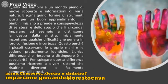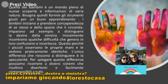Bisogna quindi fornire gli strumenti giusti per un buon apprendimento. I bambini iniziano a prendere consapevolezza di se stessi e dello spazio che li circonda. Imparano ad esempio a distinguere la destra dalla sinistra. Inizialmente incontrano qualche difficoltà che genera loro confusione e incertezza, perché i piccoli osservano le proprie mani e le vedono praticamente identiche. L'unica differenza che riescono a distinguere è la specularità.